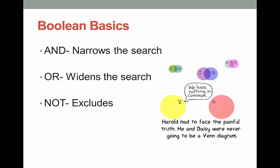NOT excludes something from your search. NOT is great to use when you have words that are spelled the same but have totally different meanings — like bat, not baseball — if you're searching for the nocturnal flying creatures versus the bat related to sports. NOT is actually not used very often as it can exclude perfectly good articles, so be careful if you do use it.